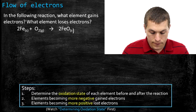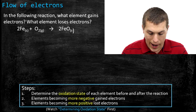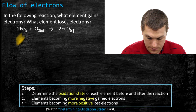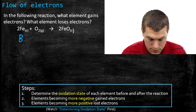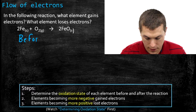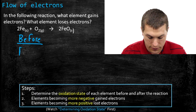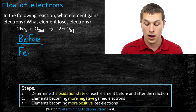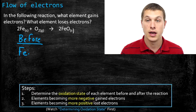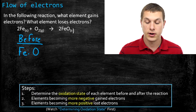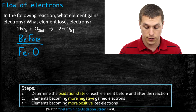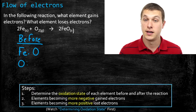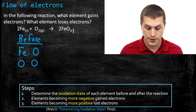So let's go ahead and take a look. If I look at iron and oxygen before the reaction, on my reactant side, I have iron all by itself. Whenever I have an element that's all by itself and not an ion, that means it has an oxidation state of zero. So before the reaction, my iron has an oxidation state of zero. My oxygen, similarly, is all by itself and not an ion, so it also has an oxidation state of zero.